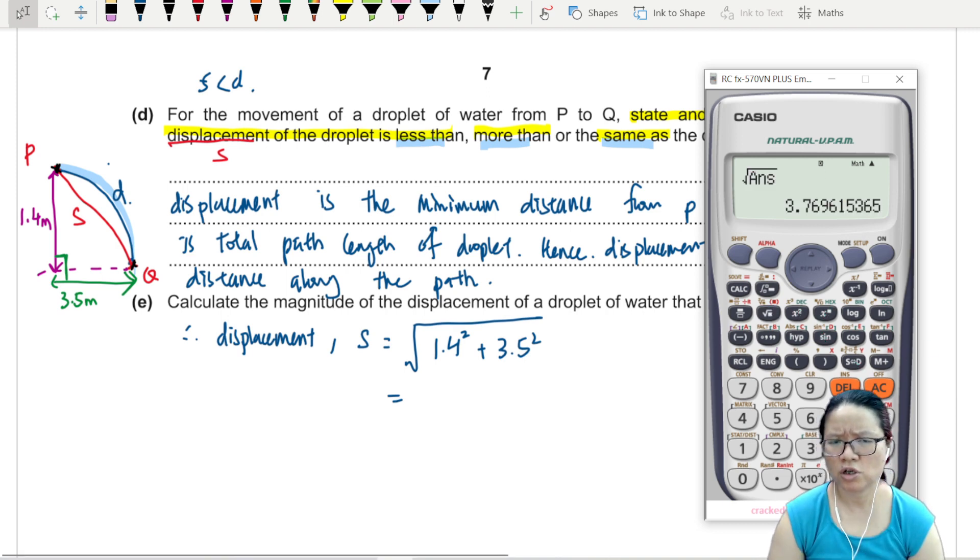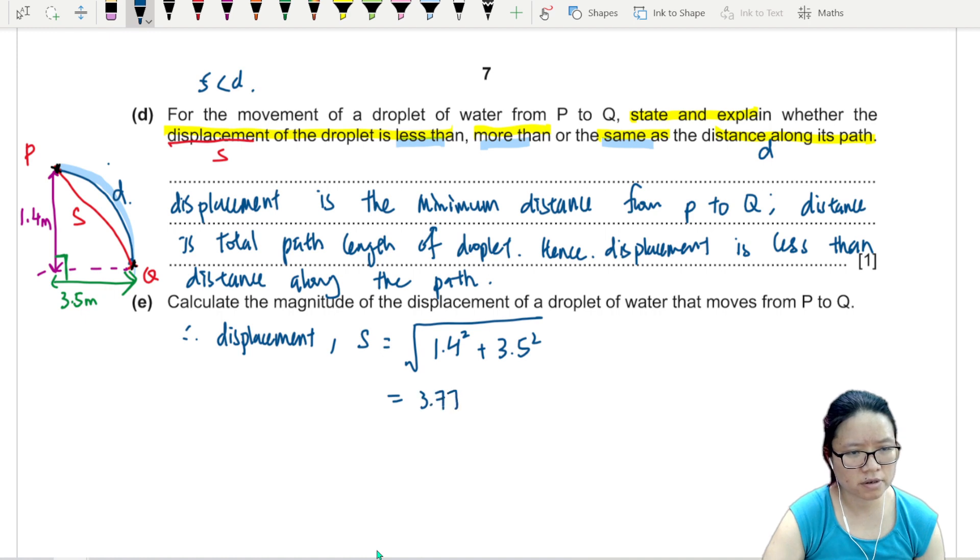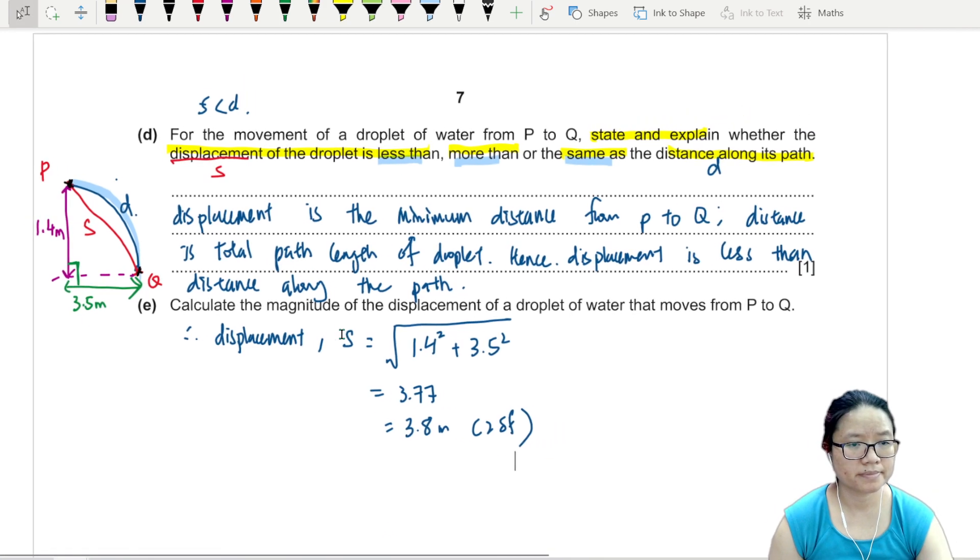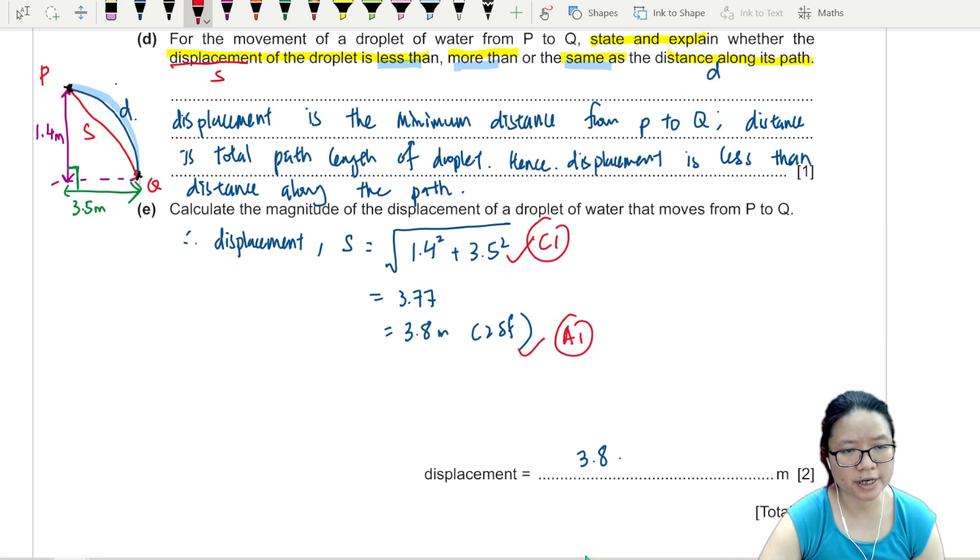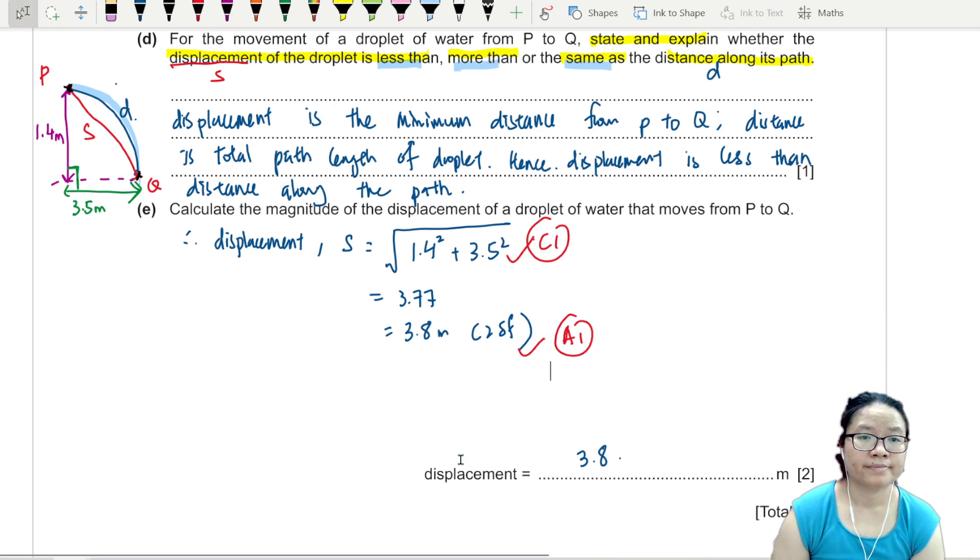1.4 plus 3.5 square root of this answer, and this will give you 3.769. So let's say I put 3.77. Rounding to 3.8, this is 2 significant figures again. 3.8. If you use Pythagoras theorem, this is C1. And leading to your final answer, 3.8 is A1. So this one is a very standard projectile question. No hoops, no tricks.